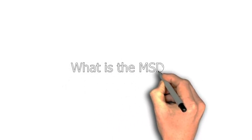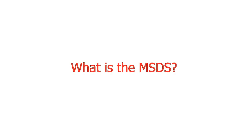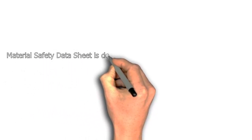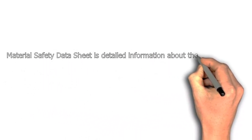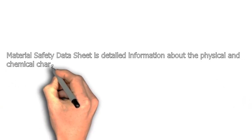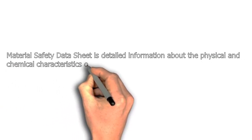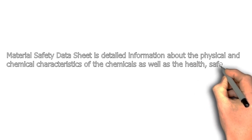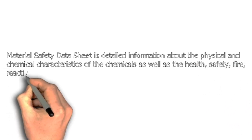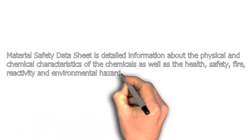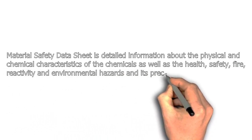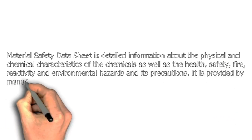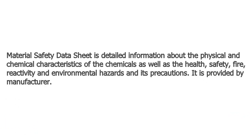What is MSDS? Material Safety Data Sheet is detailed information about the physical and chemical characteristics of chemicals, as well as the health, safety, fire, reactivity and environmental hazards and their precautions. It is provided by the manufacturer.